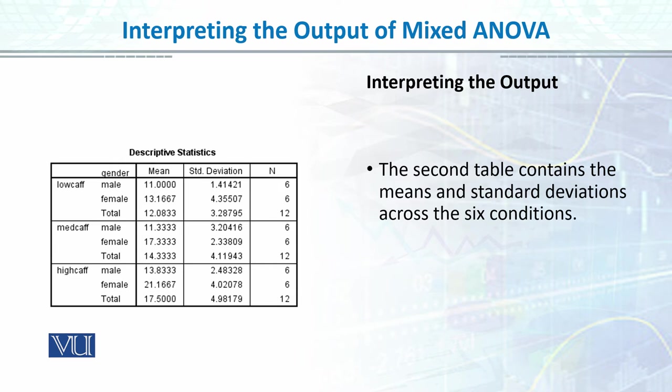The next table is descriptive statistics, which is very important because sometimes results are not significant, but descriptives give us the idea of how the groups differ. Our dependent variable is memory. You can see the mean and standard deviation — low caffeine shows fewer memory mistakes for both males and females, while with high caffeine, recall mistakes are more.